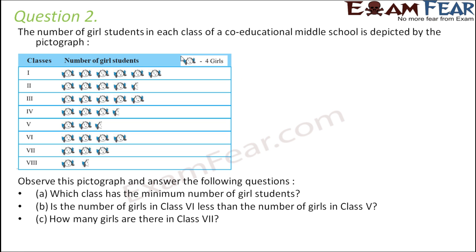Look at this very closely. Each picture refers to four girls. Now looking at this pictograph, we will have to answer the following questions. Which class has the minimum number of girls students?